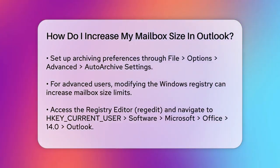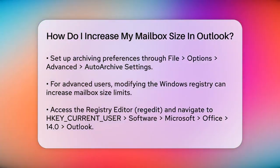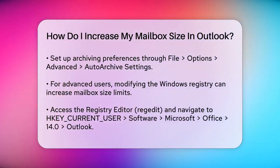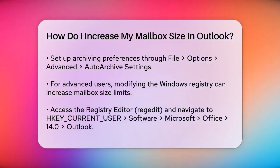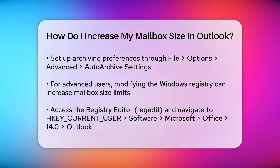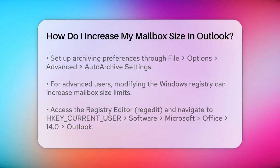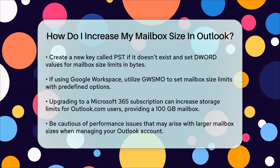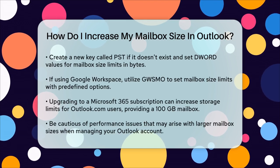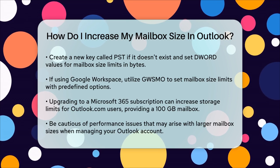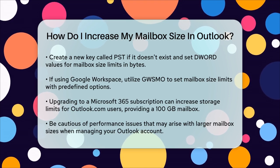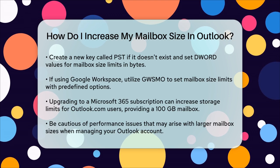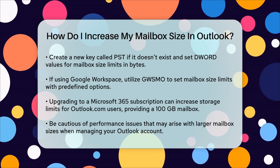Using Google Workspace Sync for Microsoft Outlook (GWSMO): If you're using Google Workspace with Outlook, you can use GWSMO to set your mailbox size. Click the GWSMO icon in your taskbar, select Set mailbox size limit, and choose from predefined sizes like 1GB, 2GB, or 4GB. Be aware that larger mailbox sizes can slow down Outlook's performance.